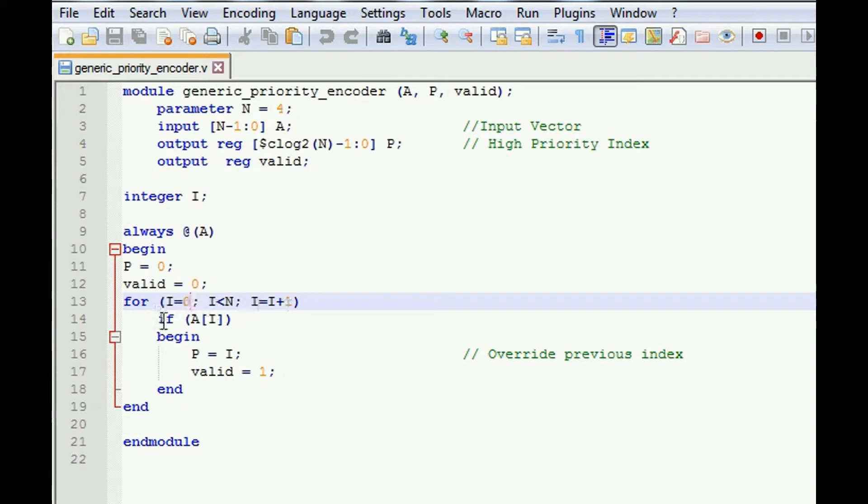Firstly, it checks if A[i] is equal to 1. So firstly i will be 0, so A[0] if it is high, then it will say P is equal to 0 and valid is equal to 1.